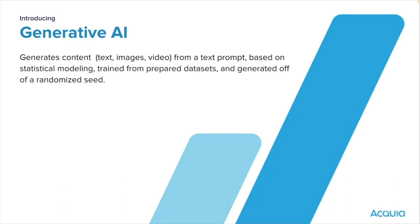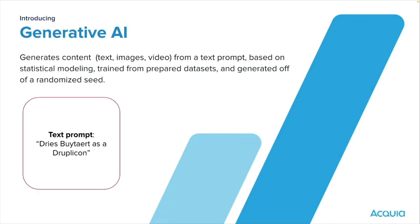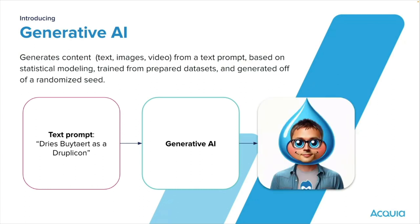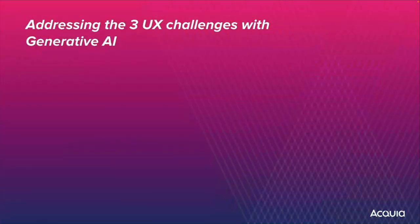To give you an example of how generative AI works, you might give it a text prompt like 'Dries Buytaert is a Druplicon.' Give that to the generative AI — and they kind of got it on point, there's a spike right at the top of his head.